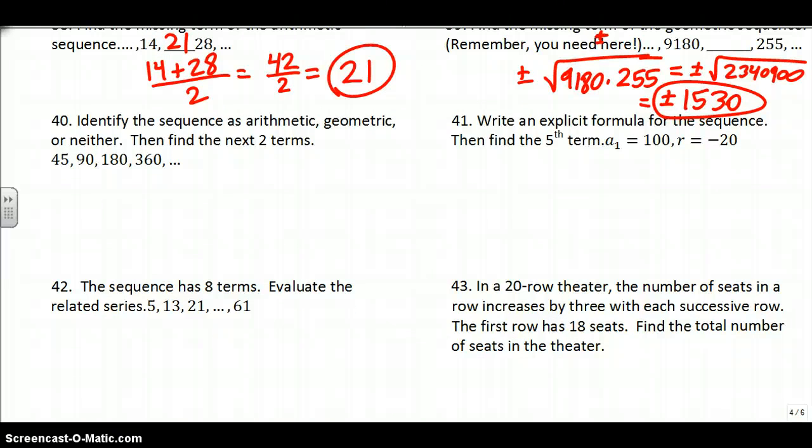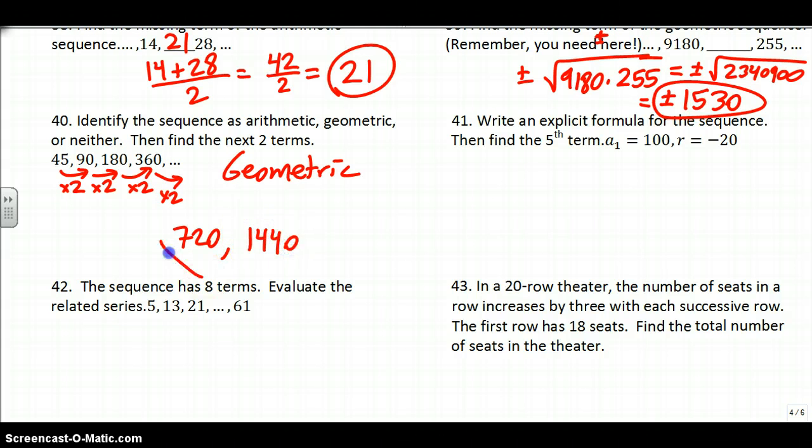Identify the sequence as arithmetic, geometric, or neither. Then find the next two terms. I think it's easier to check arithmetic first. I'm adding 45 to get to 90, then I have to add 90 to get to 180. Since I'm adding two different numbers, not arithmetic. Let's try geometric. What am I multiplying by to get to 90? That's times 2. 90 to 180? Times 2 as well. 180 to 360 is times 2 as well. So it is definitely geometric. They want us to find the next two terms. You can use the formula or just multiply by 2 again. 360 times 2 is 720, 720 times 2 is 1440. For geometric, the formula is A1 times R to the N minus 1. So the formula for this one would be 45 times 2 to the N minus 1 power.